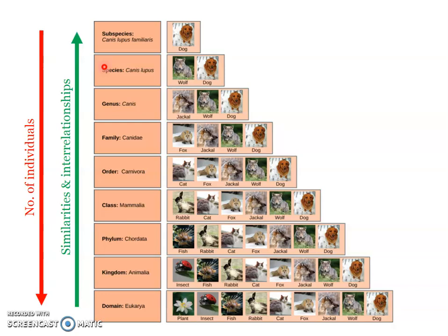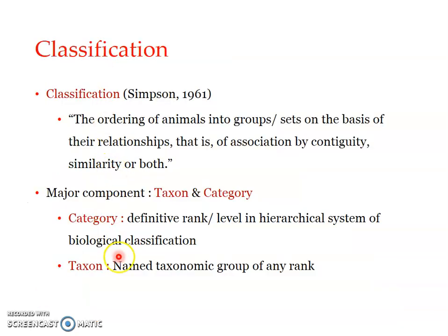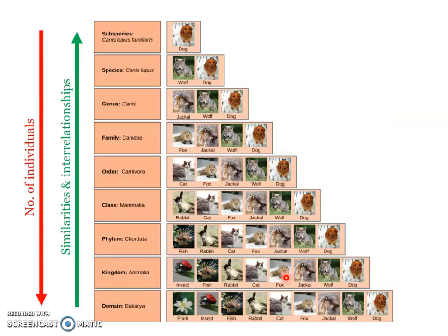What is a taxon? A taxon is a named taxonomic group of any rank — we can say it is a named category. For example, if we say 'Kingdom Animalia,' that is a taxon. But if we say just 'kingdom,' it is a category.